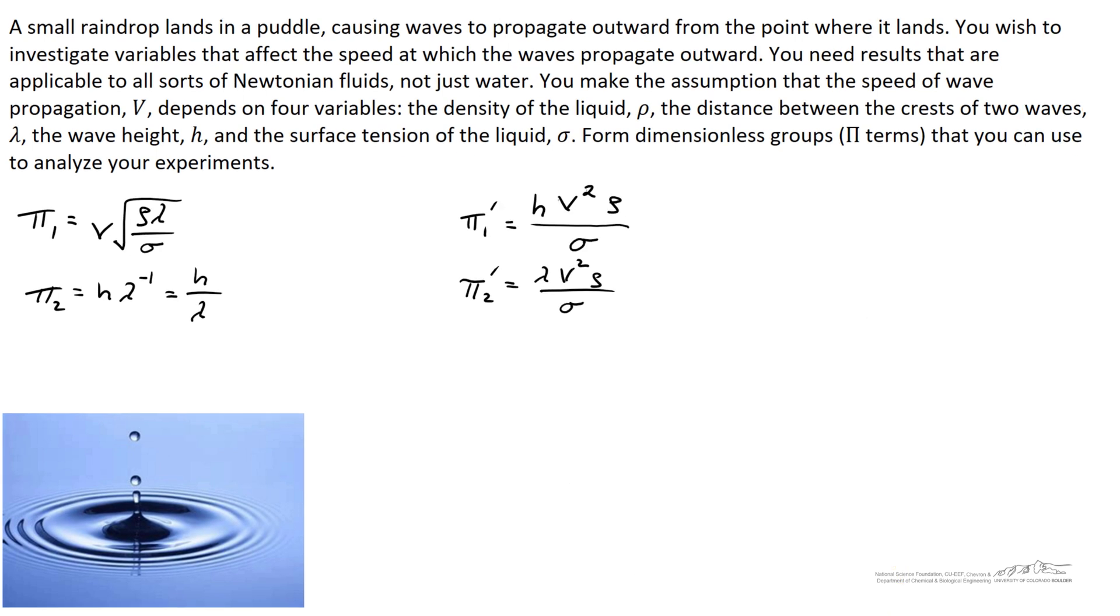So let's look at the relationship between these pi terms. Remember you can do things like square a pi term, and it's still dimensionless. So if we took pi 1 and squared it, what we find is we've got v squared rho lambda over sigma, which is equal to pi 2 prime, also a dimensionless quantity.